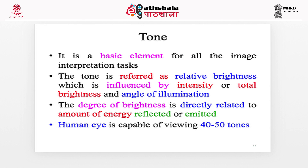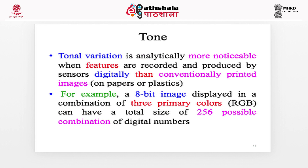Tone — in common terms, tone is called color, and it is the basic element for all image interpretation tasks. Tone is referred to as relative brightness, which is influenced by intensity or total brightness and angle of illumination. The degree of brightness is directly related to the amount of energy reflected or emitted. As a general rule, the human eye is capable of viewing 40 to 50 tones. Tonal variation is analytically more noticeable when features are recorded and produced by sensors digitally than in conventionally printed images on paper or plastic.